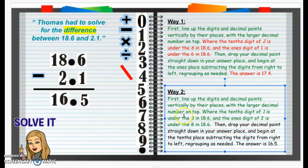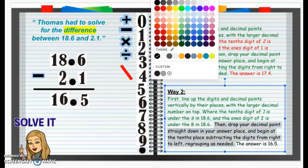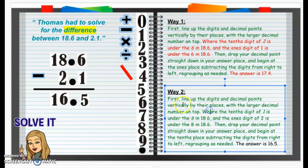Then drop your decimal point straight down in your answer place — yes, we did that. And begin in the tenths place, subtracting the digits from right to left, regrouping as needed — yes, indeed. So I'm going to put that green as well. Now let's make sure Way 2 has the answer correct. The answer is 16 and 5 tenths. Did we get 16 and 5 tenths? Yes, we did! So I'm going to put that green.